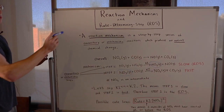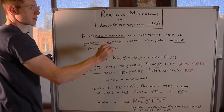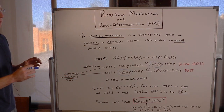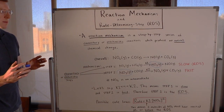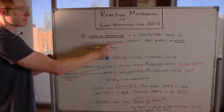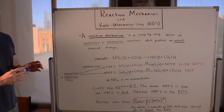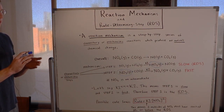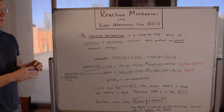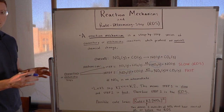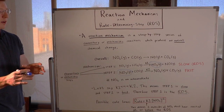In this video, I want to discuss reaction mechanisms and the rate determining step, abbreviated RDS. A reaction mechanism is a step-by-step series of elementary or mechanistic reactions which produce an overall chemical change. Another way to think about a reaction mechanism is that it is essentially a very detailed molecular description of what is precisely going on as reactants turn into their products.